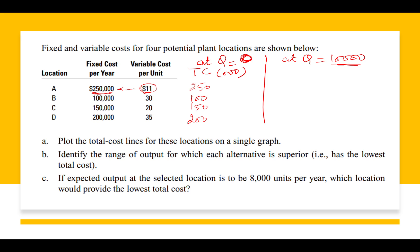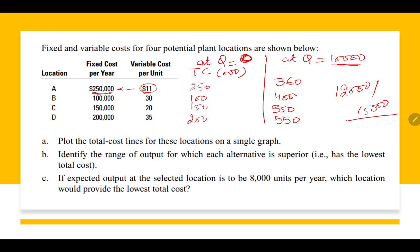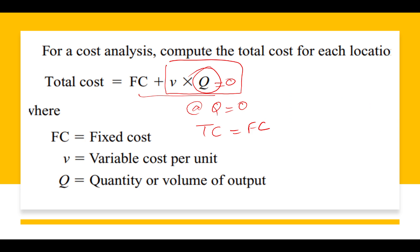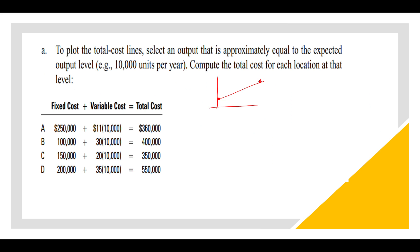At quantity equal to 10,000, the total costs come out as: 3,60,000; 4,00,000; 3,50,000; and 5,50,000 for the four locations. Within a few seconds these values are calculated at Q = 10,000. These values are shown in the table and this is how the two points for each line are established.